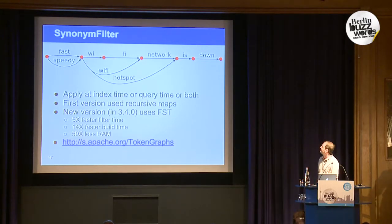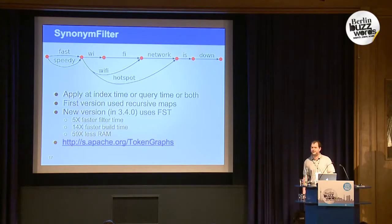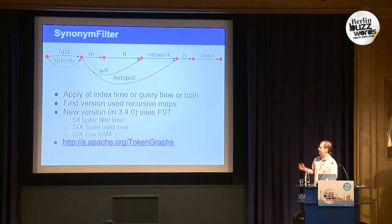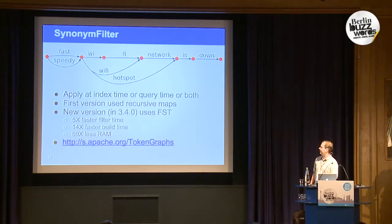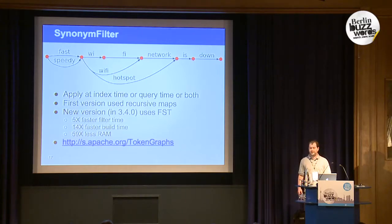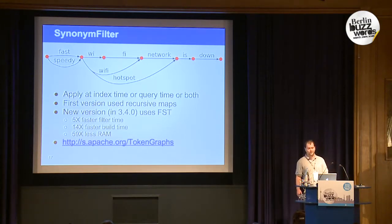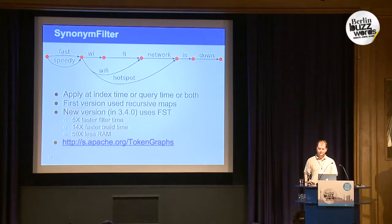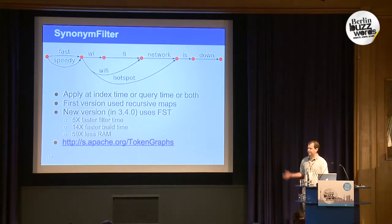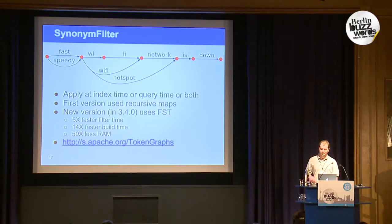Previously we did not use FST for synonyms. If you have a big synonym dictionary — and a lot of people have huge synonym dictionaries — it was using monstrous amounts of memory because you'd use hash maps and other typical Java structures, creating tons of objects. A million synonyms was a massive amount of overhead. So we rewrote it to use an FST, and the result is much faster construction and 59 times less RAM than before. This is available as soon as Lucene 3.4, so you should upgrade if you're on an older version.